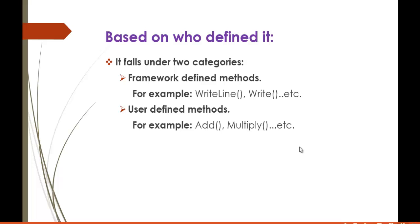Based on who defined it, there are two main categories: framework defined methods and user defined methods. Framework defined methods are already defined in the framework and we use them — for example, WriteLine, etc. User defined methods means the user defines certain methods — for example, if you want to write a method for addition you'll create a method called 'add', or for multiplication a method called 'multiply'. That is the difference between framework defined and user defined methods.